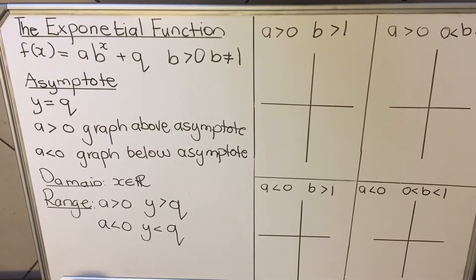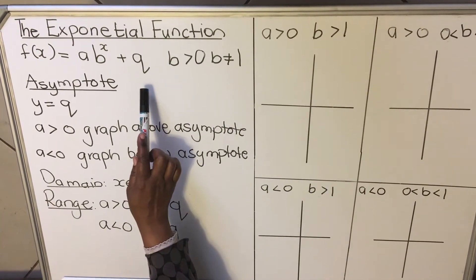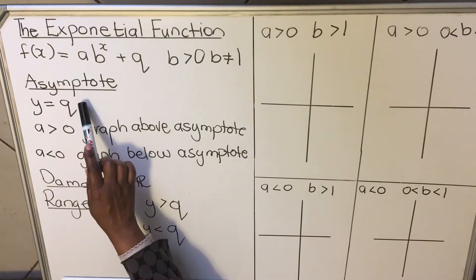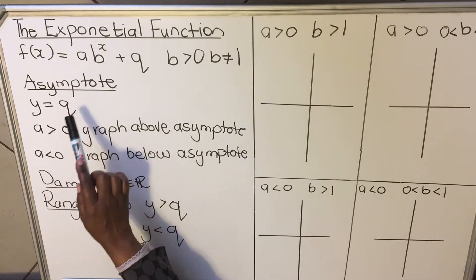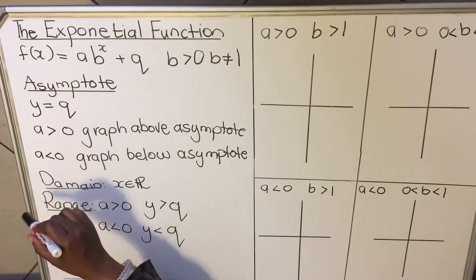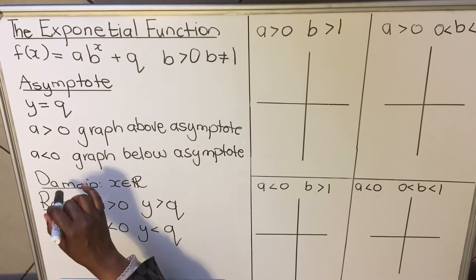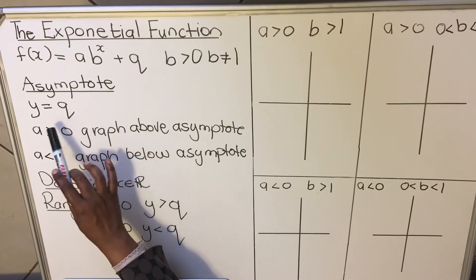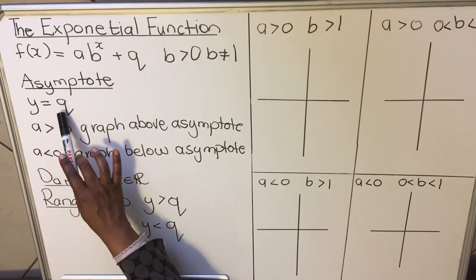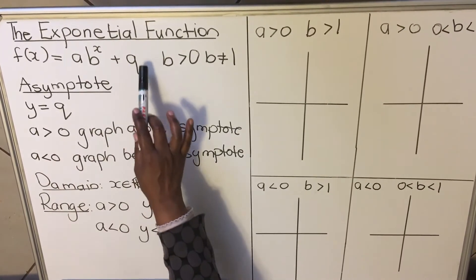B must always be greater than 0 and must not be equal to 1. With an exponential graph, your asymptote — an asymptote is the line that a graph goes towards but doesn't touch — your asymptote is y equals Q. So it will be y equals that number that is there.